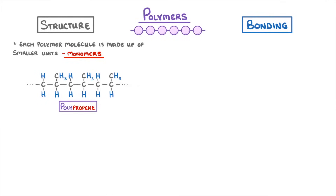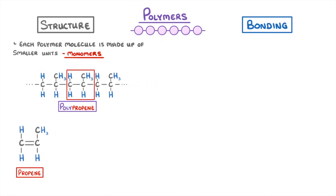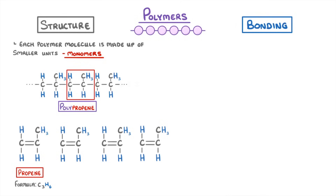For example, polypropene is one of the main polymers in plastic, and a single molecule can be thousands of atoms long. But it's actually made from monomers called propene, which have the formula C3H6. If we line a few of them up, you can see how they could keep adding together again and again until they form a huge polymer chain.